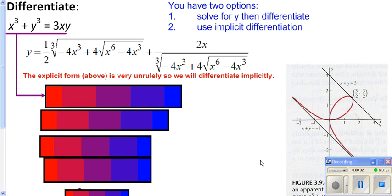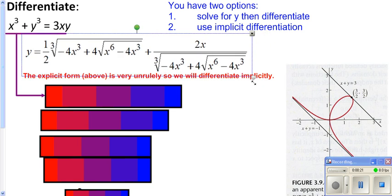We need to go ahead and take the derivative of x cubed plus y cubed equals 3xy. If you could actually go ahead and solve it for y to get y by itself, you would end up getting this right here — not exactly a fun equation to take the derivative of. So a lot of times it's going to be easier just to do implicit differentiation.